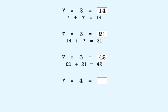Now, seven times four. First, we double seven and get fourteen. Then, we double fourteen and get twenty-eight.